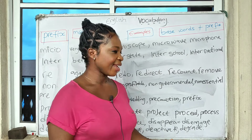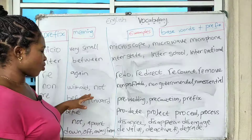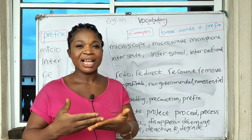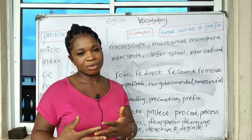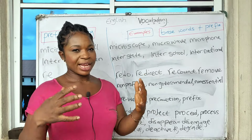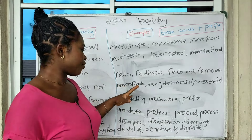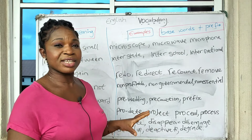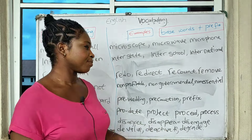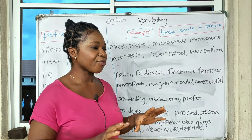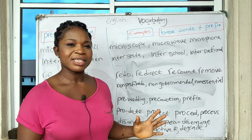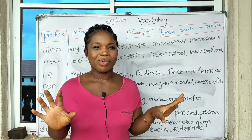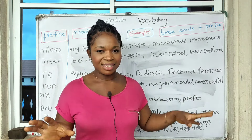'Non' simply means not or without. 'Non-profitable' means something that is not profitable. Any organization that doesn't involve profit-making is a non-profitable organization. 'Non-governmental' means it is not of the government. 'Non-essential' means something that is not important — with it or without it, we are okay. So 'non' replaces the word 'not.'